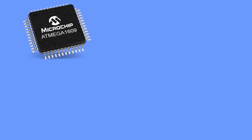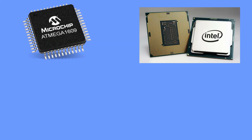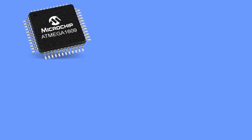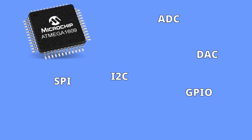First thing first, what's a microcontroller and how does it differ from a microprocessor? To keep things simple, let's say that the microprocessor contains just the processing unit, and the microcontroller contains a processing unit along with different peripherals that interact with the outside world. These peripherals are, for example, GPIO ports, analog to digital and digital to analog converters, and various peripherals used to interface with different low-level buses like SPI,